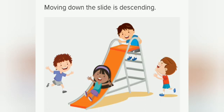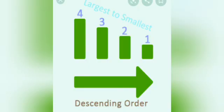Suppose we slide down when taking slide. So, descending order is when numbers are arranged from largest to smallest.